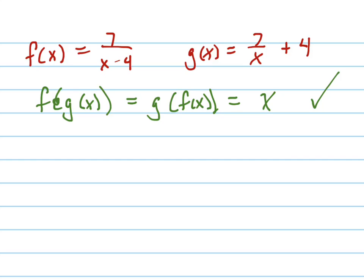So let's do this. First of all, let's find f of g of x. I'm going to start writing f of x, but instead of writing x, I'm going to write g of x in there. 7 over x plus 4 minus 4.